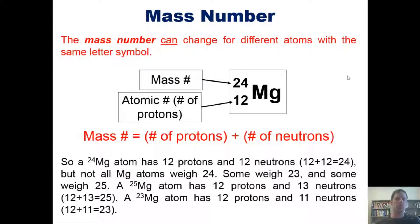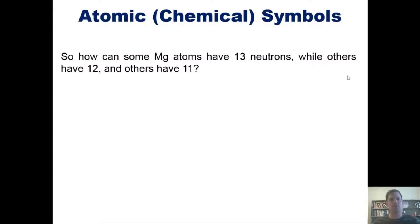A magnesium-24 atom has 12 protons and 12 neutrons because it weighs 24. But not all magnesium atoms weigh 24. Some weigh 23 and some weigh 25. A magnesium-25 atom has 12 protons and 13 neutrons because 12 plus 13 equals 25. A magnesium-23 atom has 12 protons and 11 neutrons because 12 plus 11 equals 23. But how can some magnesium atoms have 13 neutrons while others have 12 and others have 11? The answer is isotopes.